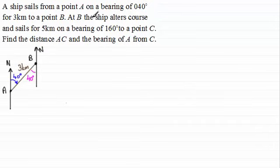Now we're told that at B the ship alters course and sails for five kilometers on a bearing of 160 degrees to a point C. So at B we've now got to turn in a clockwise sense 160 degrees. So that's going to take us down in this direction something like that. For five kilometers where this angle in here turning clockwise is 160 degrees. So we get to this point here which is the point C. And again draw not only a north line in but extend it down and it becomes a north south line.